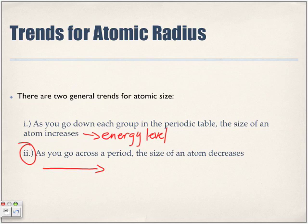If we look at lithium and treat it as a Bohr diagram, we have two electrons on the first energy level and one lonely valence electron. There is an attraction between the positive protons in the nucleus of the atom and the electrons in the first energy level.